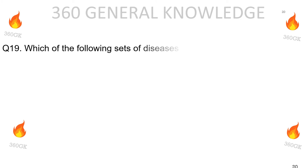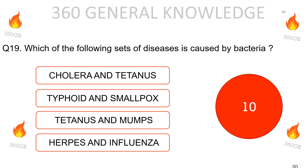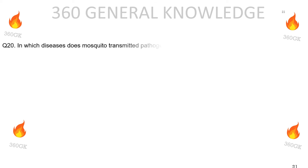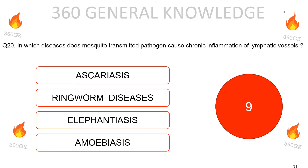Which of the following sets of diseases is caused by bacteria: cholera and tetanus, typhoid and smallpox, tetanus and mumps, or lupus and influenza? The correct answer is cholera and tetanus. In which disease does a mosquito-transmitted pathogen cause chronic inflammation of lymphatic vessels?